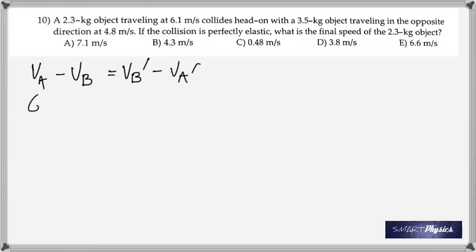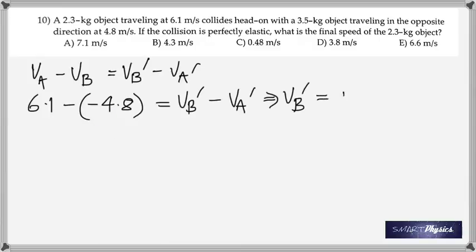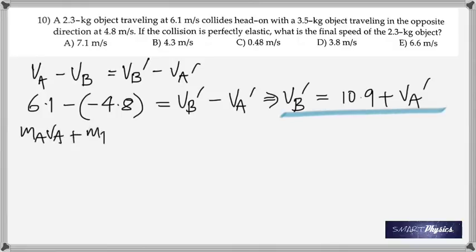Remember that this question is an elastic collision, perfectly elastic. That's why we could use the special formula. The negative is because that object is moving in the opposite direction initially. So you get one equation from that and then use the conservation of momentum to get the second equation.